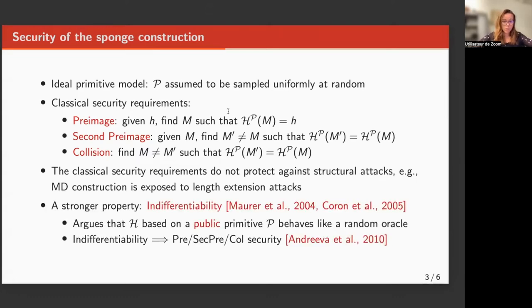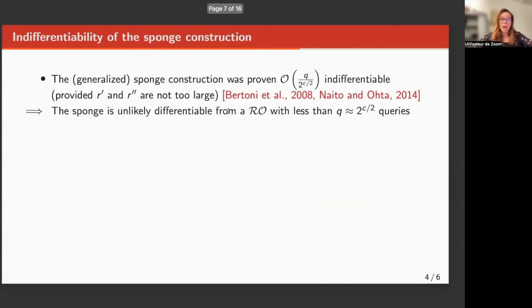In fact, there exists a stronger security property which is called indifferentiability. In short, it is a distinguishing game where the adversary must differentiate between a random oracle and the construction based on a public primitive. It has been shown among others that indifferentiability implies security of pre-image, second pre-image, and collision.